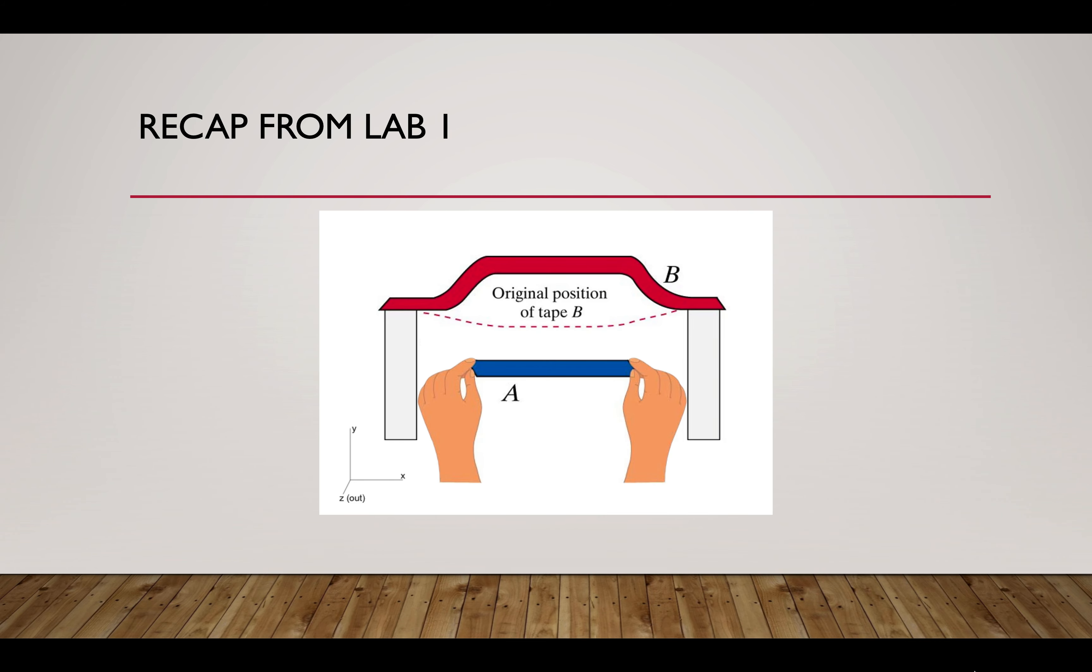So recap from Lab 1, we are doing a tape lab. What we are doing is we hold tape A as shown in the figure and close to tape B from underneath. And then we will see that tape B is floating upward, showing that there is a repulsion from the electronic forces between the two tapes. So that's what we are doing in Lab 1.